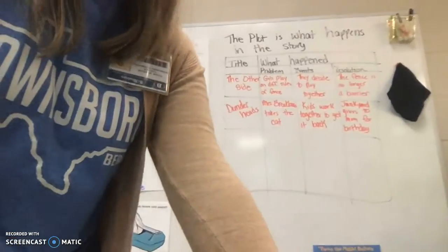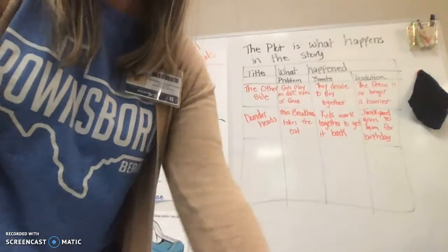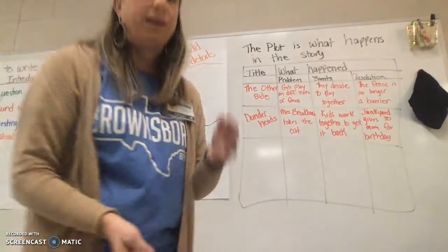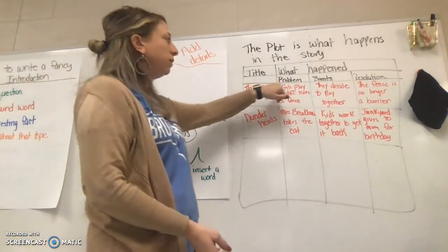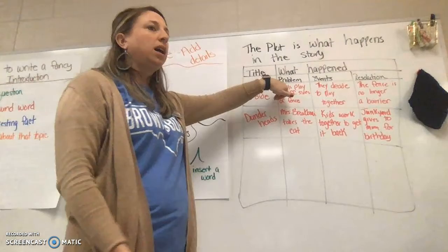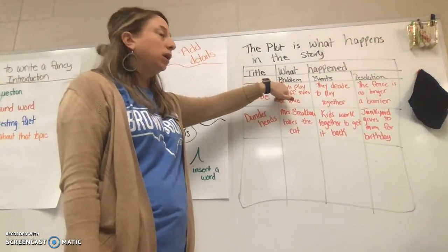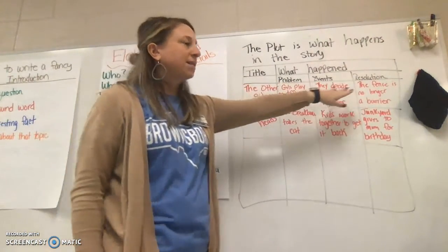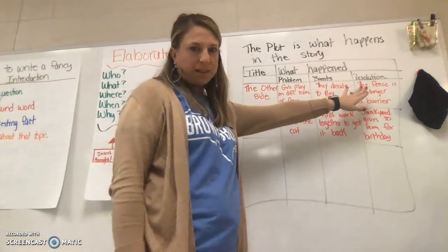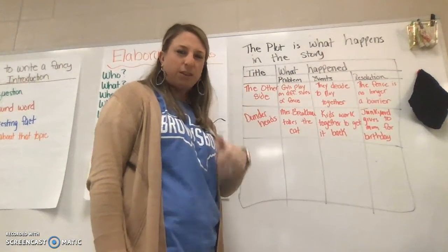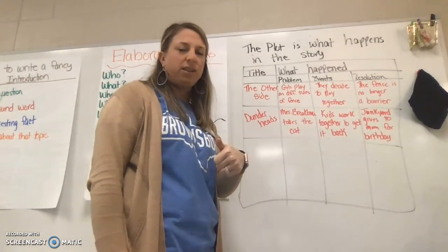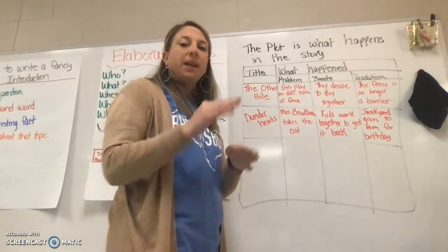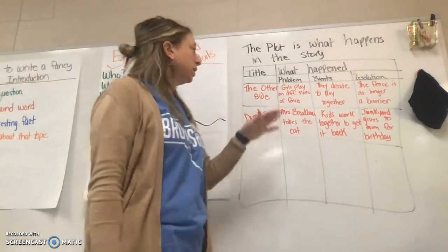So we're going to look at a little chart here today that is over some books we've already done to help us understand. This would be our rising action, this would be our climax, and this would be the resolution. It doesn't have the exposition and the falling action in this one, but it kind of has the ups and the downs.